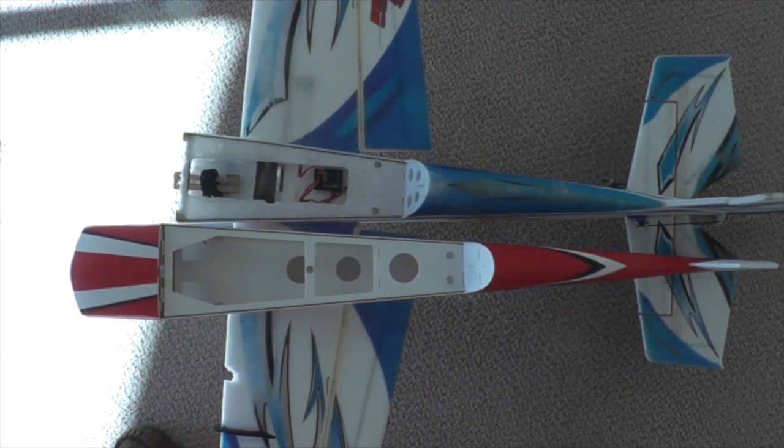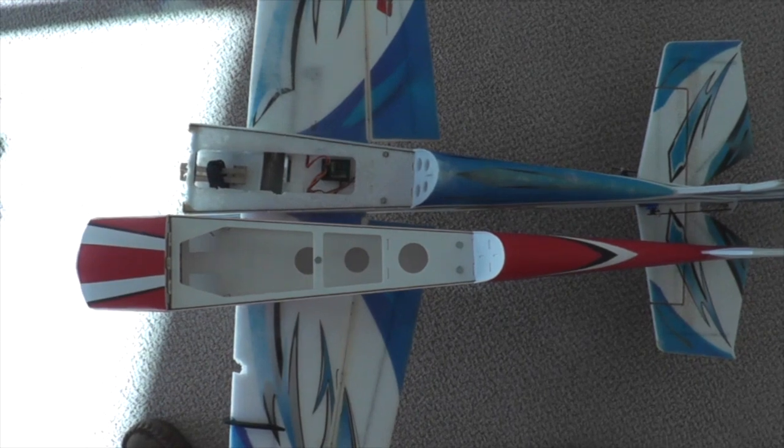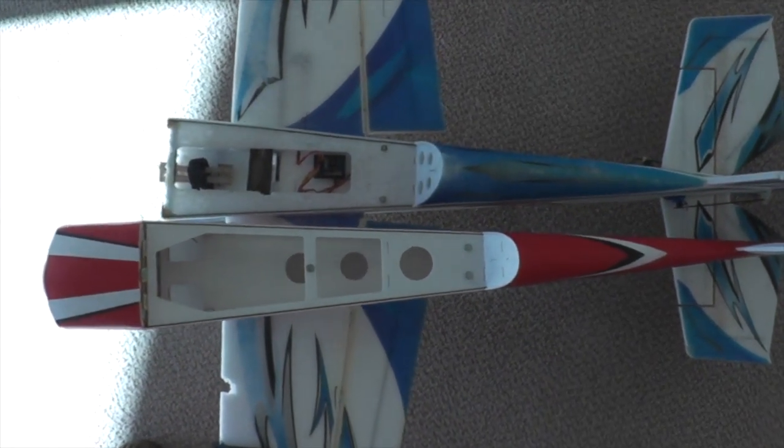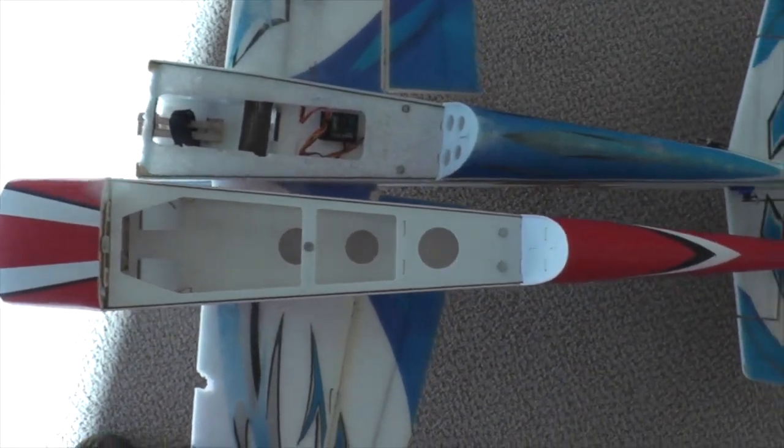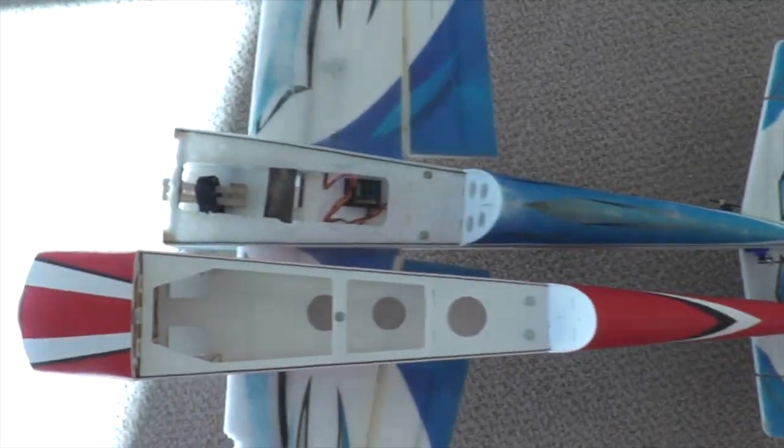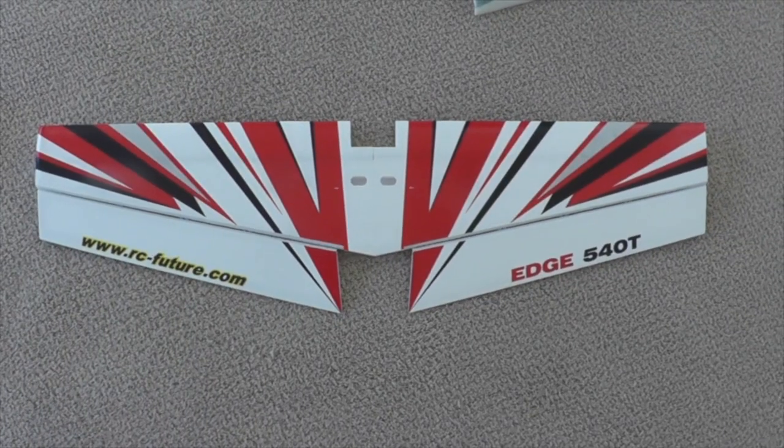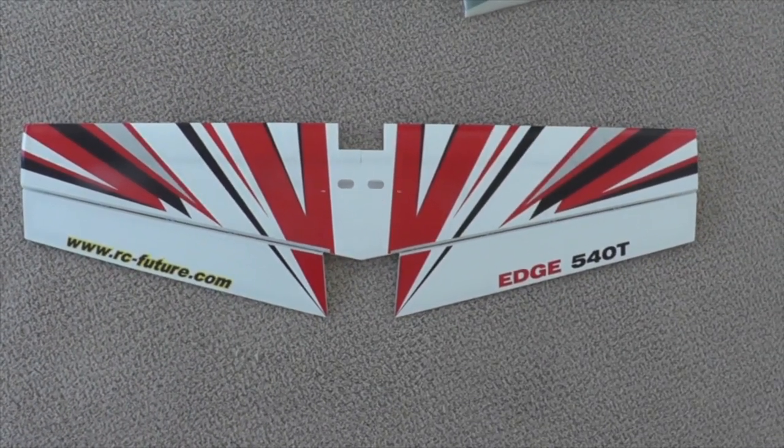The Future Model fuselage is the same length, but it is a little bit narrower. What's really interesting is it's extremely rigid trying to twist it compared to the SkyWing version. And the same thing goes for the wing.